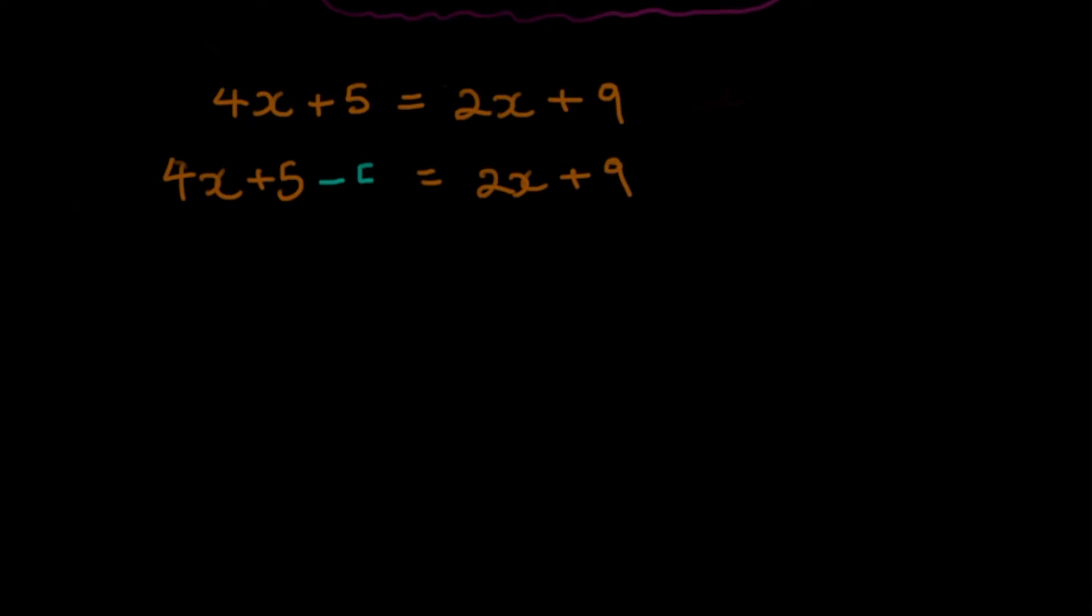Let us start off by subtracting 5 from both sides of the equation. This part right here, which is plus 5 minus 5, that simply goes, so that's 0. We're left with 4x is equal to 2x. What is 9 minus 5? That's going to be 4. So let's put plus 4.